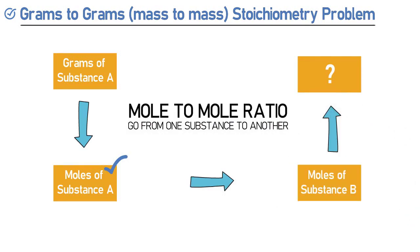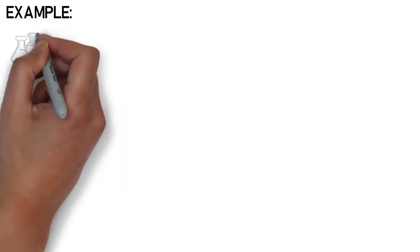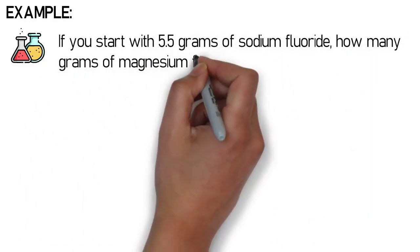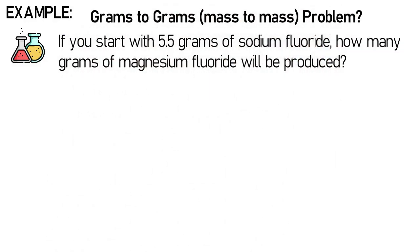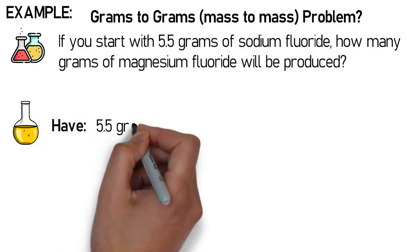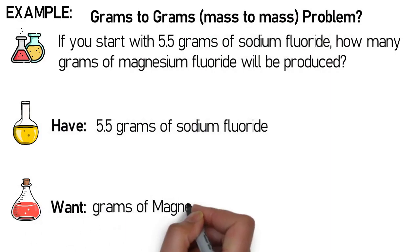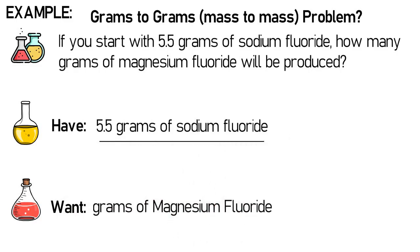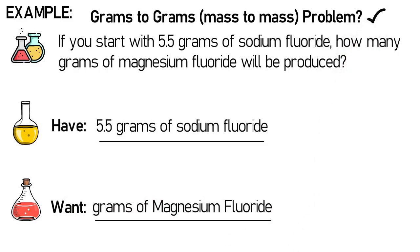Let's try an example. Our problem is: if you start with 5.5 grams of sodium fluoride, how many grams of magnesium fluoride will be produced? Is this a grams-to-grams or mass-to-mass problem? We know that there is 5.5 grams of sodium fluoride, and we are trying to find grams of magnesium fluoride. Being given a starting amount of 5.5 grams of one substance and trying to find the mass of another tells us we are doing a mass-to-mass problem.